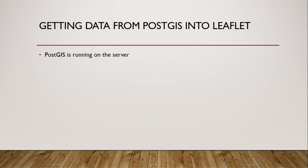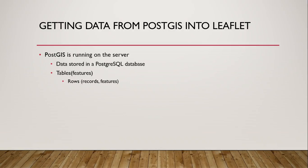PostGIS is running on the server and our data is stored in a PostGIS SQL database, which means our data is stored in a number of different tables. Each table is composed of rows, which are sometimes called records, or if it's spatial data, a row might be called a feature. Each row is composed of columns, which might also be called fields, or especially with spatial data, a column might be called an attribute — a specific piece of information about a specific feature, such as its name or its status.